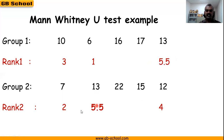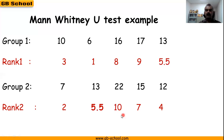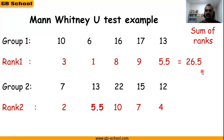Since the 6th rank is used, next we have 7th rank for 15, 8th for 16, 9th for 17, and 22 gets the 10th rank. Now we find the sum of ranks in group 1, which is 26.5, so R1 is 26.5.